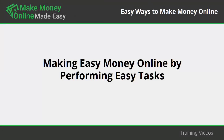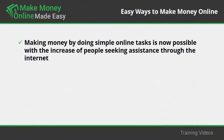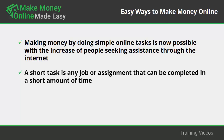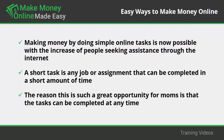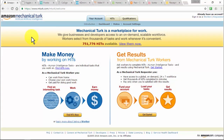Making easy money online by performing easy tasks: Making money by doing simple online tasks is now possible with the increase of people seeking assistance through the internet. A short task is any job or assignment that can be completed in a short amount of time, and the tasks vary greatly in nature as does the pay. MTurk.com — Mechanical Turk is a web service providing an on-demand, scalable human workforce to complete jobs humans can do better than computers, such as recognizing objects in photos. MTurk workers earn somewhere between $3 and $3.25 per hour.